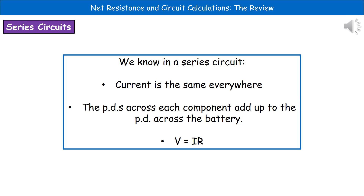Recapping what we know about a series circuit: the current is the same everywhere in that circuit — no matter where you connect your ammeter, you will get the same reading. The potential difference across each component adds up to the potential difference across the battery. And potential difference equals current times resistance. These three facts are essential for other calculations.